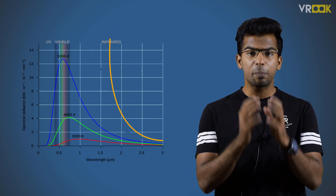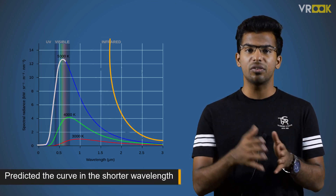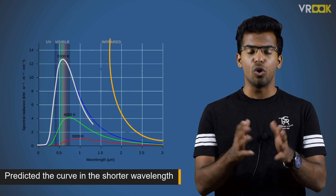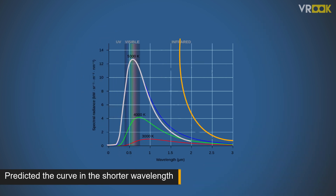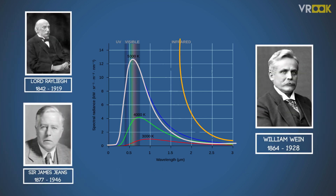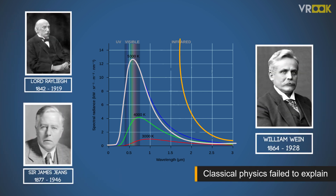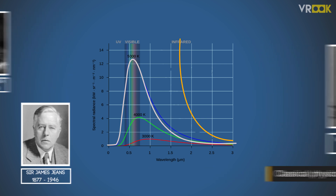On the other hand, William Wien was also studying black bodies. He gave an equation which predicted the curve in the shorter wavelength region but failed in the longer wavelength region. These predictions using classical physics ultimately failed to explain the energy emissions and find an answer to the behavior of light. Then came German physicist Max Planck.